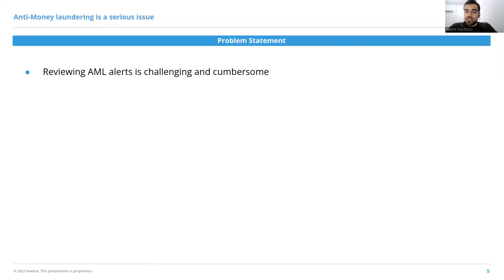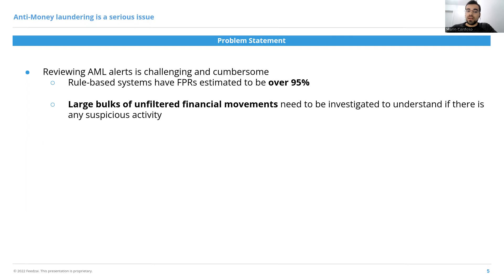Despite being a very crucial step, reviewing these AML alerts is a very challenging and cumbersome process. This is because rule-based systems have very high false positive rates, estimated to be over 95%, because the analysts have to filter through a large bulk of financial movements to detect suspicious activity. These large bulks of interactions typically require the analysts to look at multiple other entities that interacted with the customer being reviewed, and so navigating this large network of interactions is very challenging.